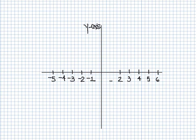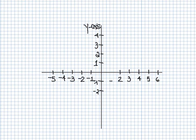Life just got two-dimensional. A number line is only one-dimensional, but a Cartesian coordinate plane is two-dimensional. On the y-axis, as you go up you get positive — one, two, three, four — and as you go down you get negative: negative one, negative two, negative three, negative four, and so on.